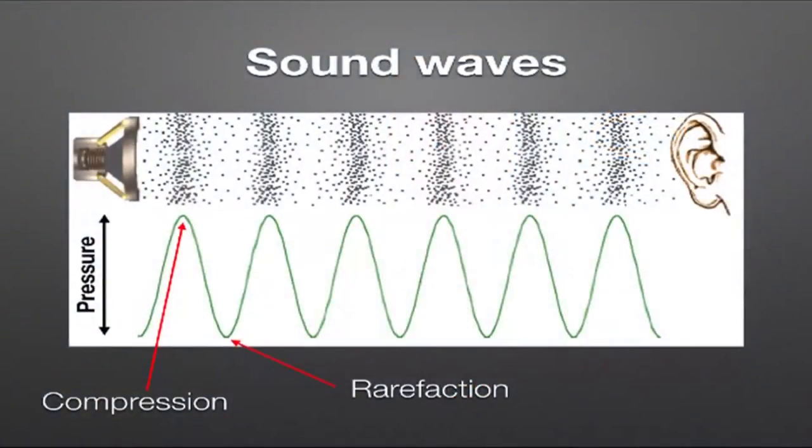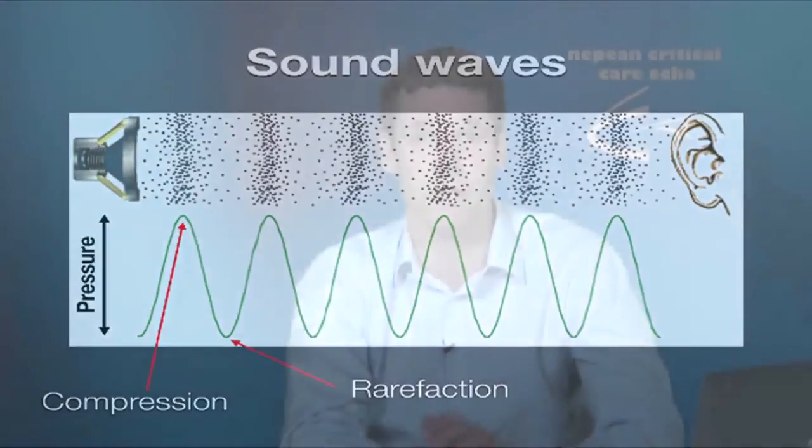Sound waves are mechanical compressions that travel in parallel and perpendicular to the actual direction of travel. Just as we have sound waves such as you're hearing now, ultrasound sound waves are no different — just of a slightly different frequency. If you were to draw the sound wave on a graph with pressure over time, you get a sinusoidal pattern representing areas of compression or increased pressure, and areas of rarefaction or decreased pressure.